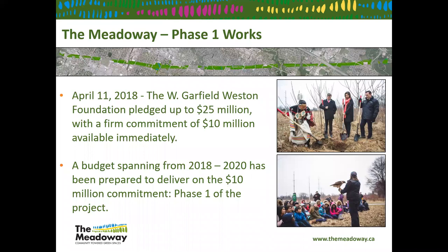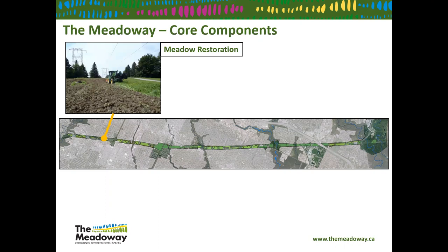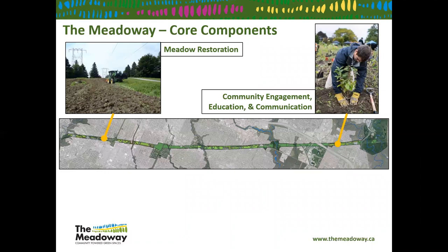Today we're in Phase One of the Meadoway project. In April 2018, we received a generous donation from the W. Garfield Weston Foundation, who pledged up to $25 million with a firm commitment of $10 million available immediately. Phase One has been underway since about 2018, taking us to about the end of this year. It comprises three main components: the meadow restoration work, a detailed and engaged community education and communication division, and the infrastructure planning, design, and implementation.